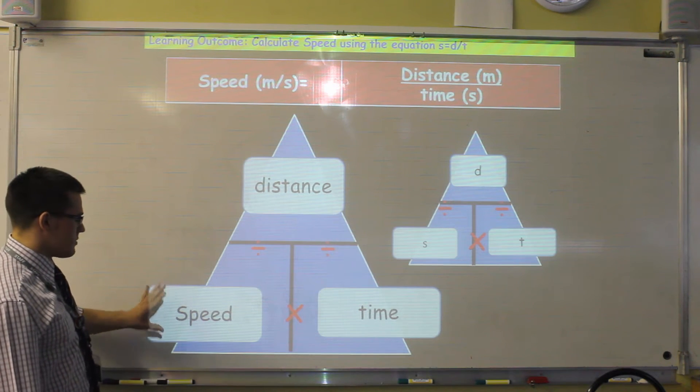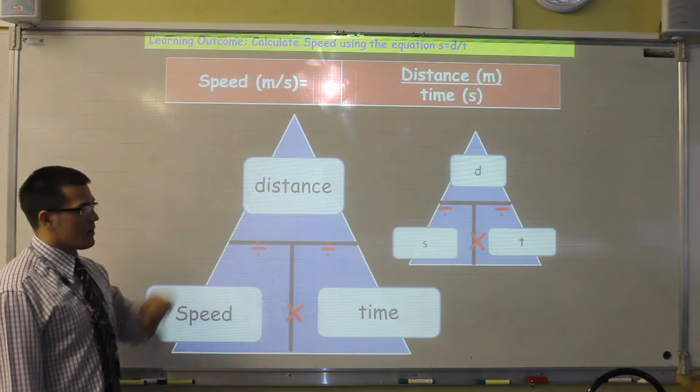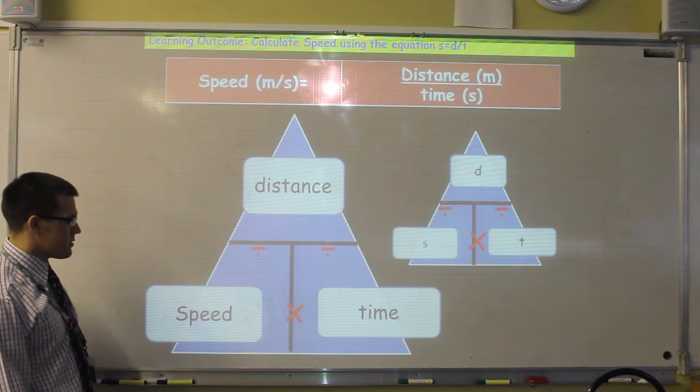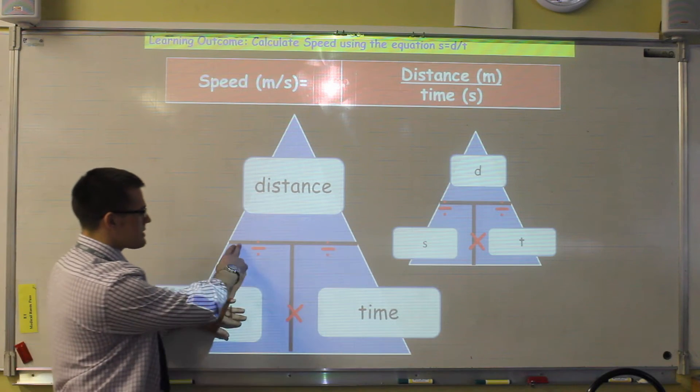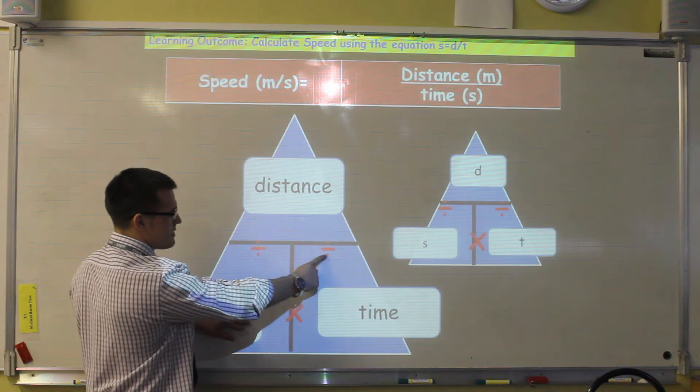So this equation can be represented as speed is distance divided by time. Now this triangle is useful because it allows us to rearrange the equation easily. So if I want to calculate speed, I cover speed on my triangle, and this line here represents division. So it's distance divided by time.